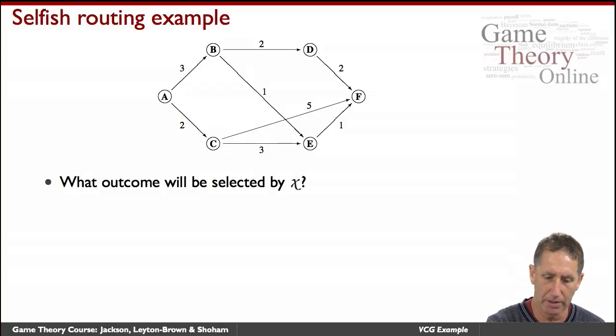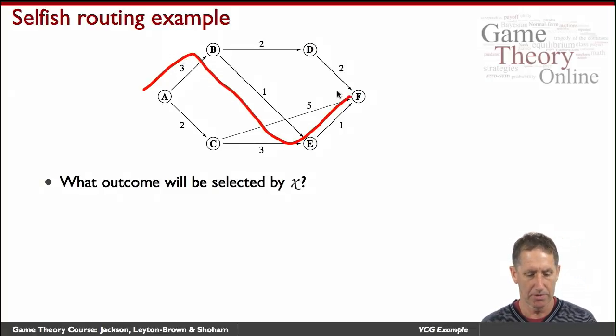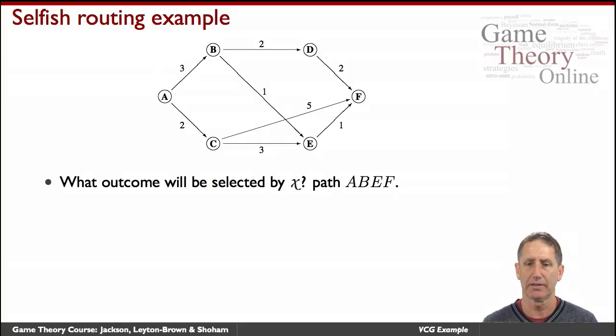Obviously, looking at it, the shortest path is this one. And so this is the path that would be selected by a traveler who wishes to get from A to F most quickly.